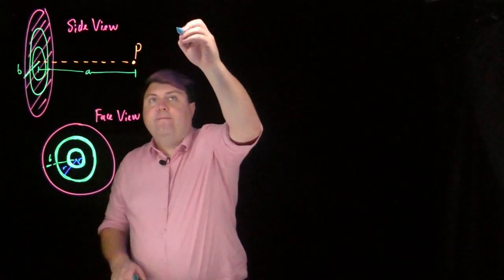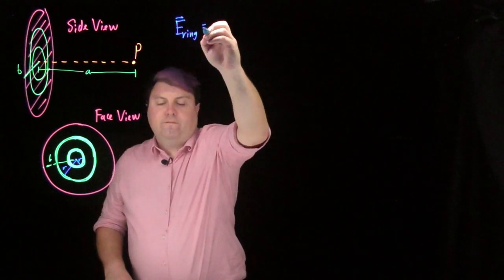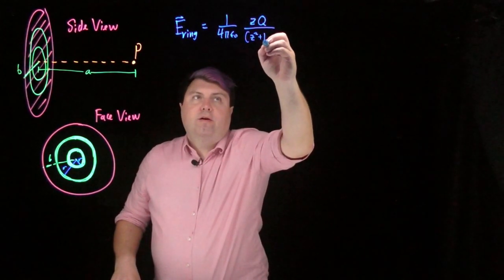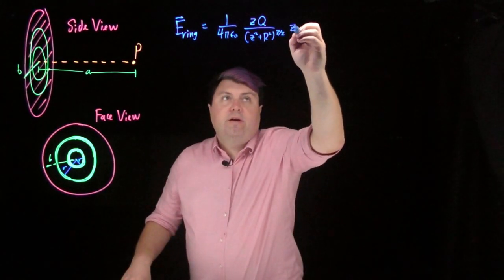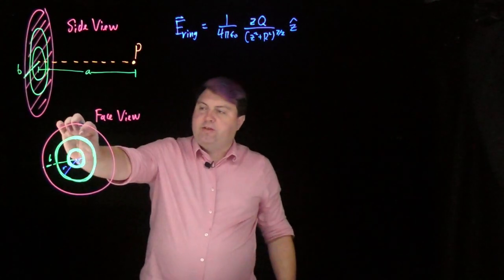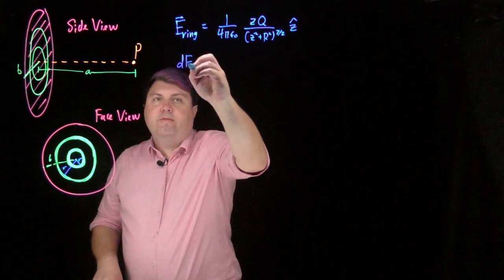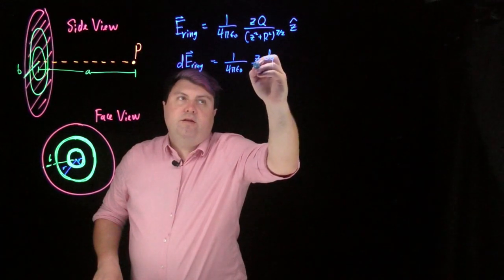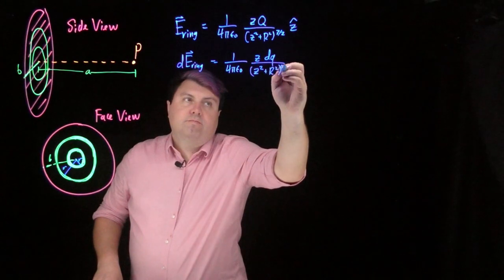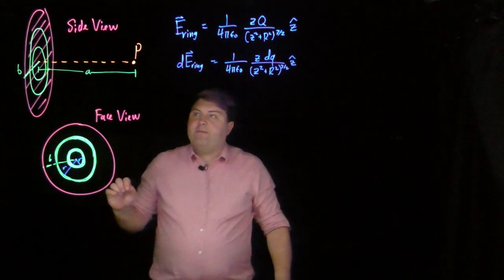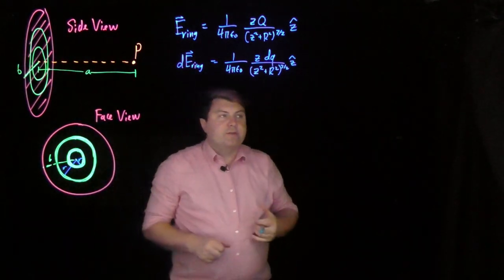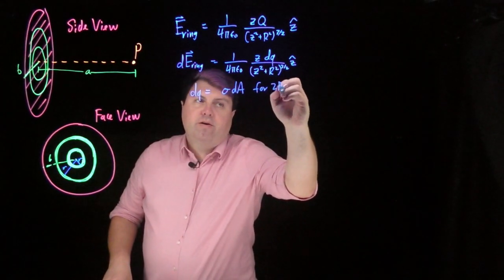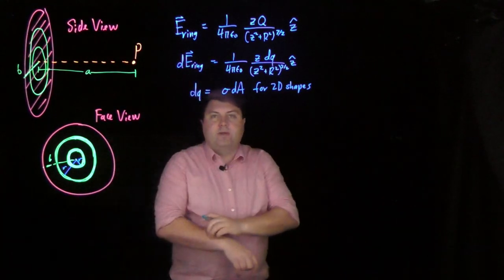So we know that the electric field of a ring is one over four pi epsilon naught z q over z squared plus r squared to the three halves in the z hat direction. Except each of these rings is going to be very, very small. So we want to think about the dE of the ring is going to be all of this just with dq. And now we have a two dimensional shape. So we could use dq equals lambda dl for one dimensional shapes, but we want to use dq equals sigma dA for 2D shapes.